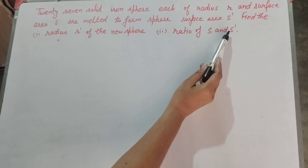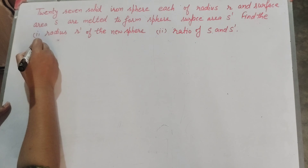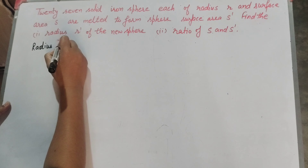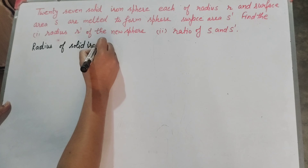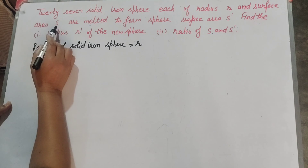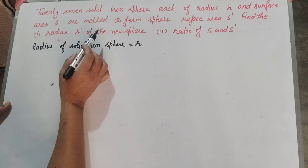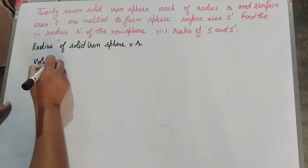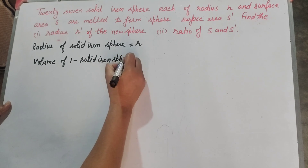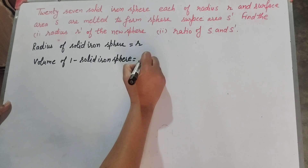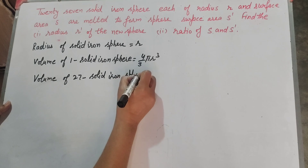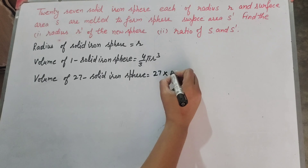Here s is the surface area of each sphere before melting and s' is the surface area of the new sphere. Given: radius of solid iron sphere equals r. We find volume of one solid sphere, which is equal to 4/3 π r³. So volume of 27 solid iron spheres equals 27 × 4/3 π r³.